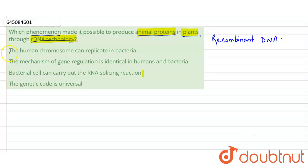Now coming up to the first option, this option is incorrect because the human chromosome has DNA and the bacteria has RNA, so it is difficult to replicate from DNA to RNA. So this option is incorrect.